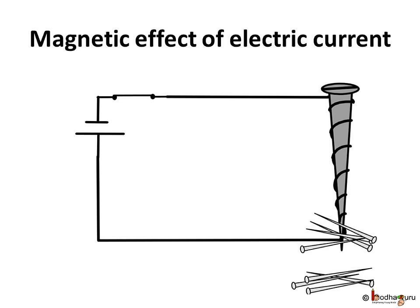We already know when the electric current passes through a wire, it behaves like a magnet. This is the magnetic effect of electric current.